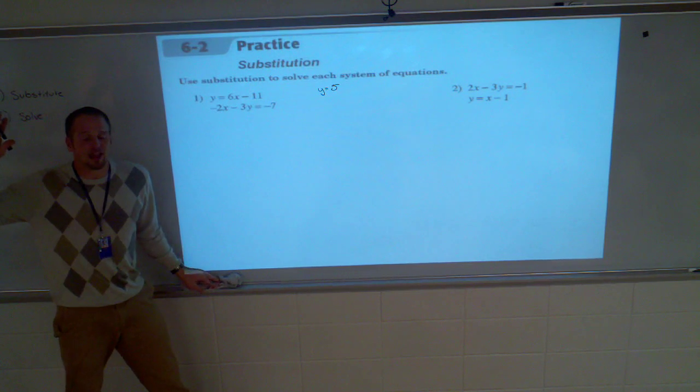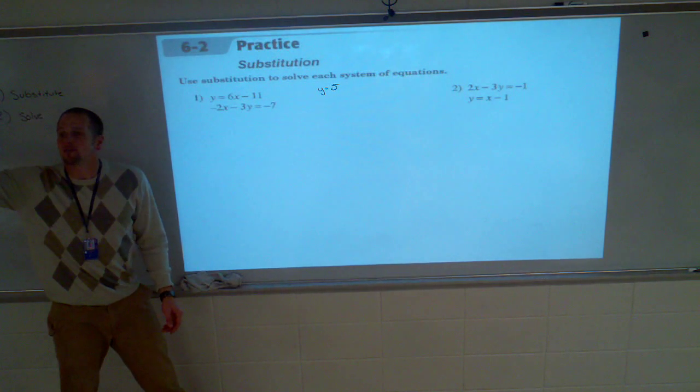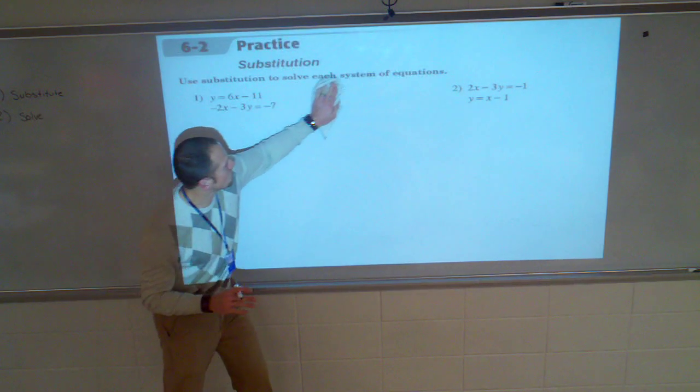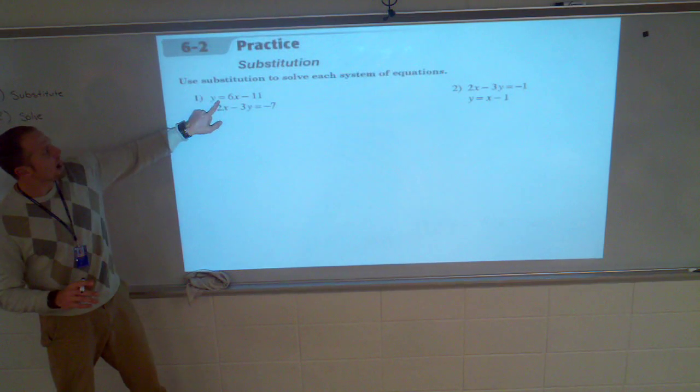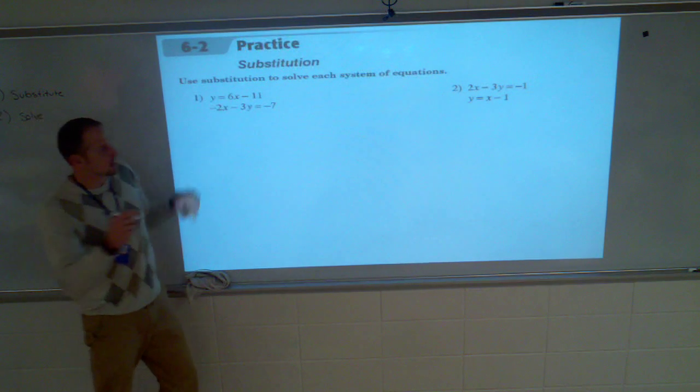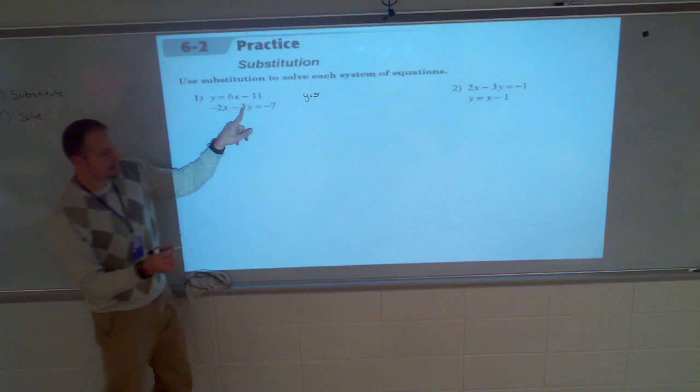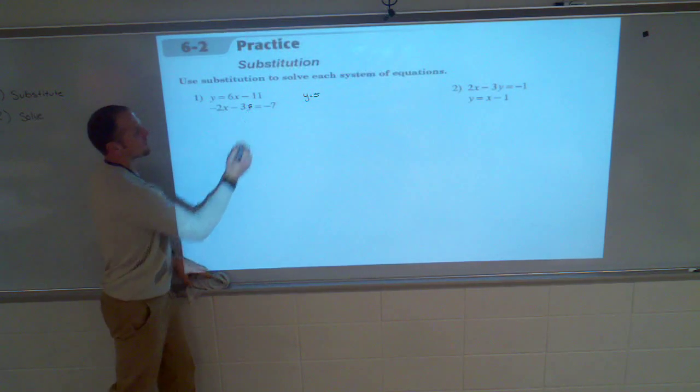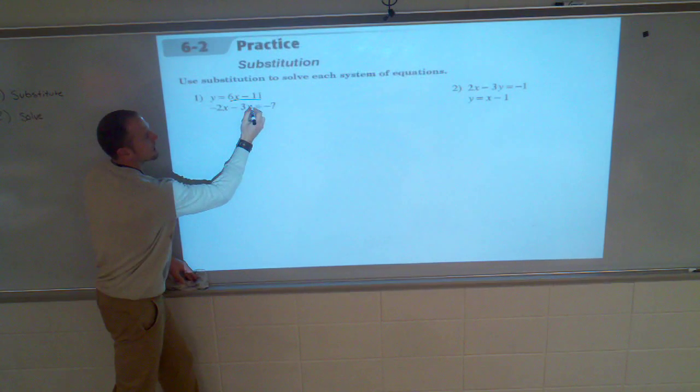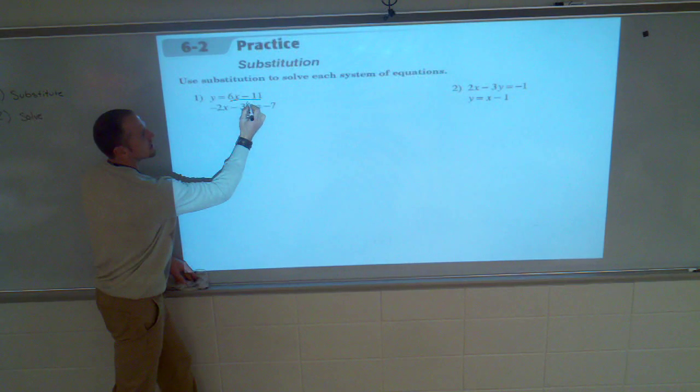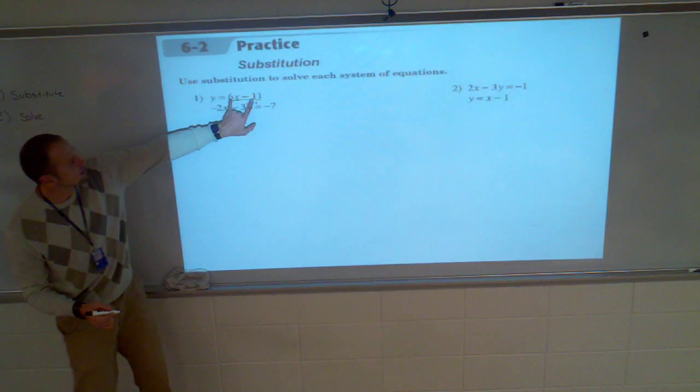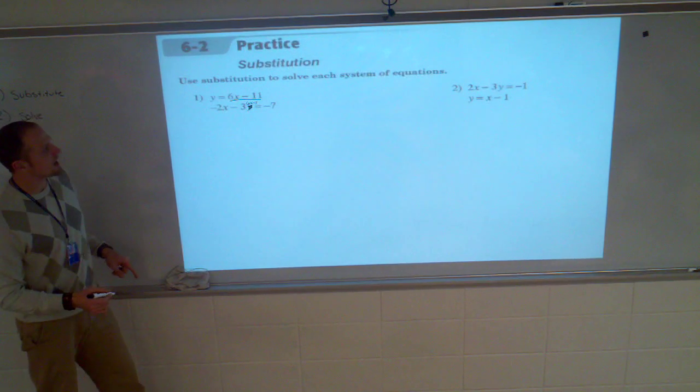Now, raise your hand if right now you're like, get on with it, I get that, that's so easy. Perfect, you're right where I want you. So now, instead of me telling you Y is equal to 5, what I'm going to tell you is Y is equal to 6X minus 11. Let's take a step back. When I told you Y was equal to 5, you came down, you erased the Y, and you wrote a 5. So, this time, when I tell you Y is equal to 6X minus 11, you need to come down, erase your Y, and write 6X minus 11. You need to substitute this in for Y down here.